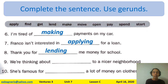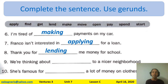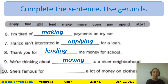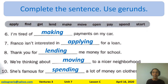Number nine: 'We're thinking about ___ to a nicer neighborhood.' The prepositional phrase is 'thinking about,' followed by a gerund. The answer is 'moving' — we're thinking about moving to a nicer neighborhood. Number ten: 'She's famous for ___ a lot of money on clothes.' We only have one choice left, and it really is the only one that fits — she is famous for spending a lot of money on clothes.